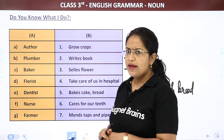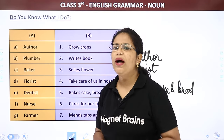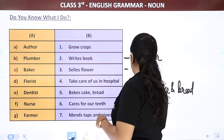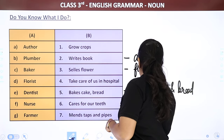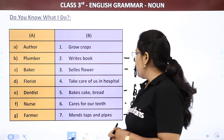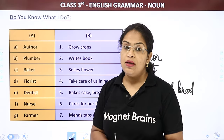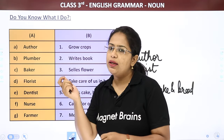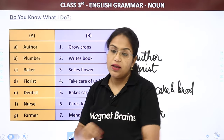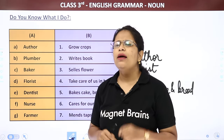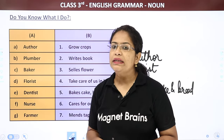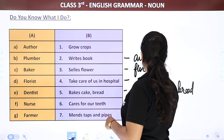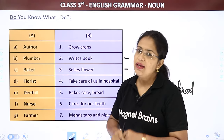Dentist — jab aapki daat todna ho toh aap kahan jaate ho? Dentist ke paas. So dentist cares for our teeth. Next: Nurse. Jab aap hospital jaate ho toh aapki vitals kaun check karta hai? Pulse check karna, thermometer, injection — usually nurse aati hai. So nurse takes care of us in the hospital.